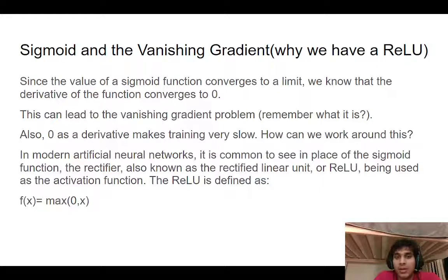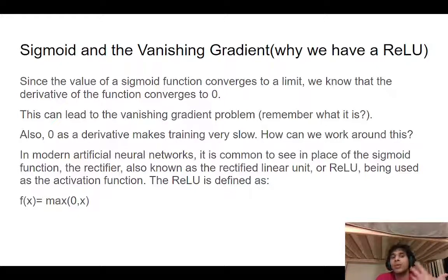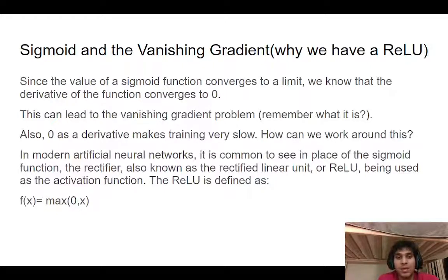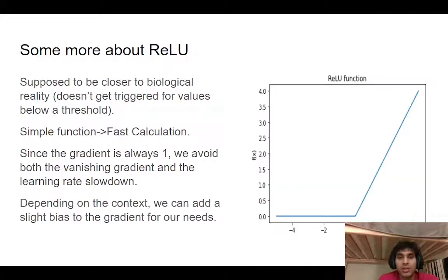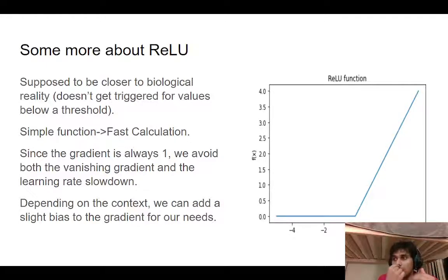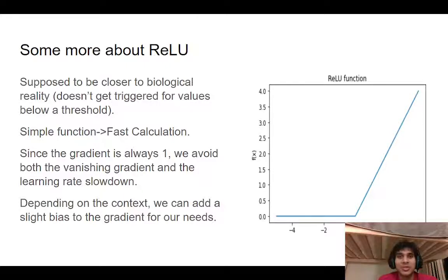Since our gradient's derivative is converging to zero, our learning rate is also converging to zero, which can make your training very slow. This is why more recent networks have started replacing the sigmoid with a ReLU — a rectified linear unit. It's a pretty simple function: it picks the maximum between zero or your input. This is also inspired by biology. The idea of an activation threshold in physical sciences means you need a certain amount of energy to trigger actions — a photon of sufficient energy to release particles.